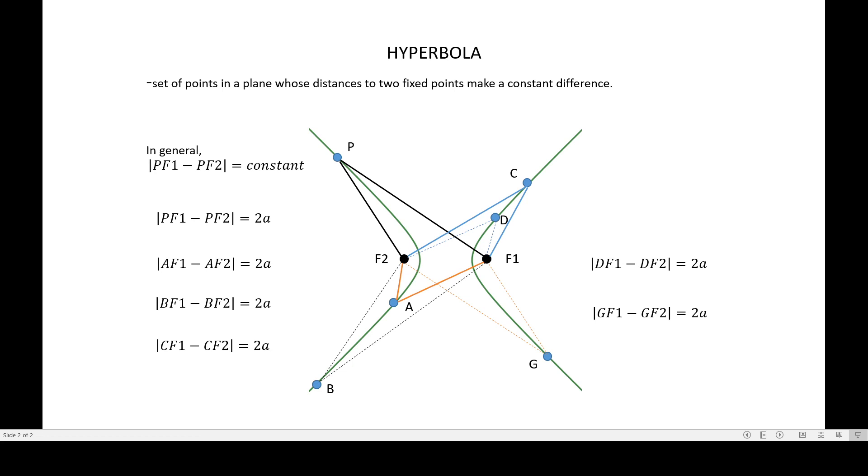2a is the major axis of the ellipse, but that is an ellipse. In hyperbola, 2a is the length of our transverse axis. Again, 2a is the length of our transverse axis. Worry less about the term for now. I will be discussing transverse axis in the next video. So that's it. Goodbye.